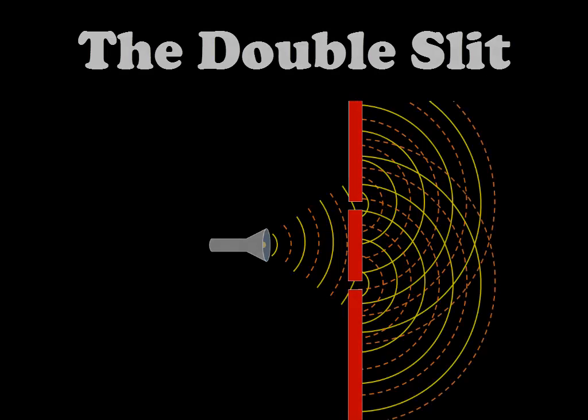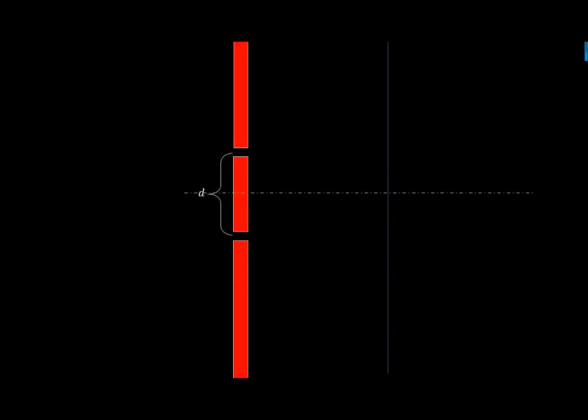Here are the key points which I want to highlight. The path difference between the two sources when they meet at any point on the screen, making an angle θ with the axis is always d sin θ which we approximate to just d θ.